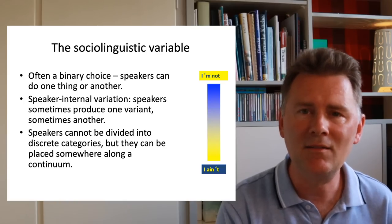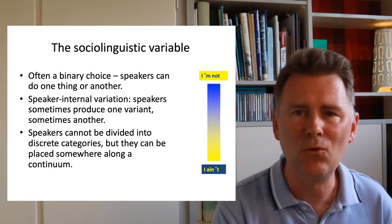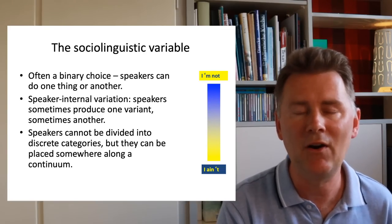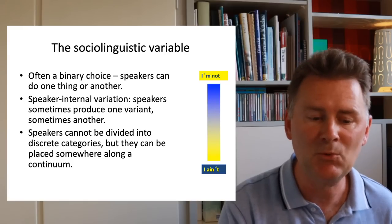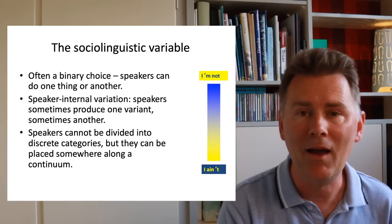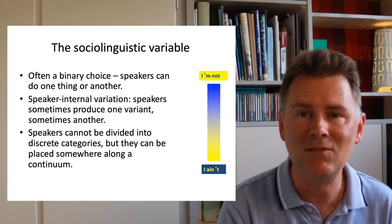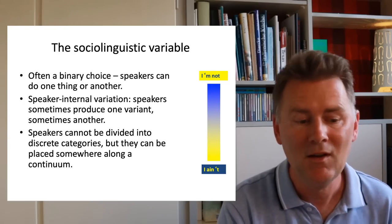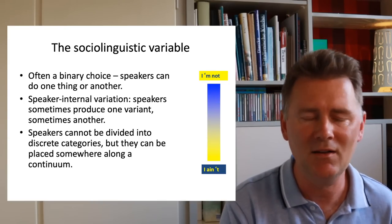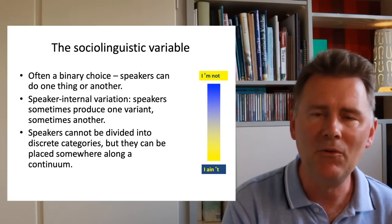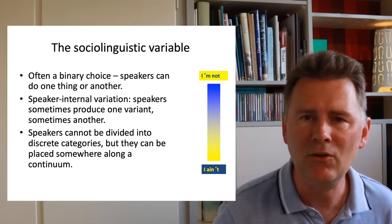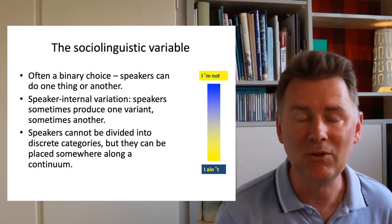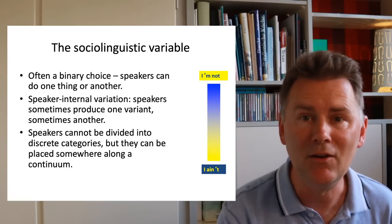That is, there is speaker internal variation. Speakers sometimes produce one variant and sometimes another, and a lot of this variation is conditioned by social factors, the social contexts in which the speaker finds themselves. So, speakers cannot be cleanly divided into discrete categories, but rather they have to be placed somewhere along a continuum so that they are more likely to use one level of the sociolinguistic variable rather than another.